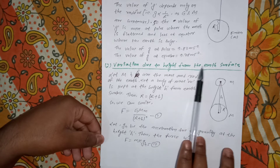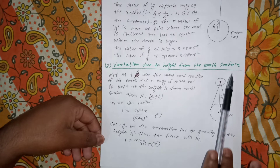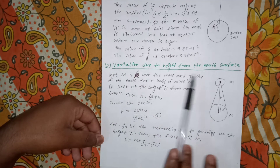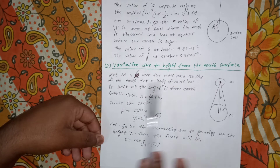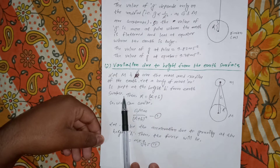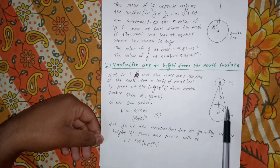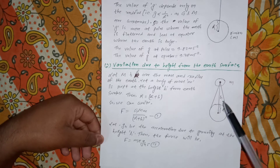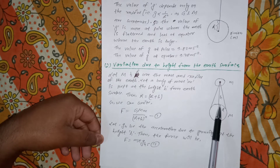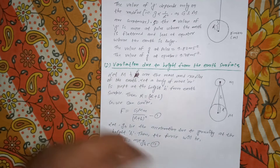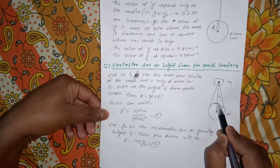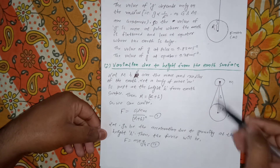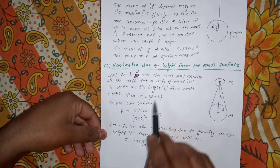The second condition is variation due to height from the Earth's surface. As we increase or decrease the height of a mass, the value of acceleration due to gravity changes. Let M and R be the mass and radius of the Earth, and let a body of mass m be kept at height h from the Earth's surface. As we can see in the figure, R is the radius of the Earth and h is the height of the small mass from the surface. The distance of the body from the center of the Earth becomes R + h.